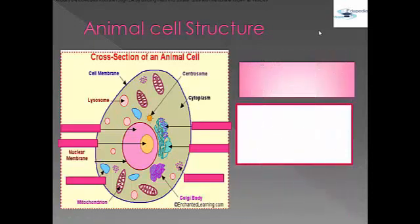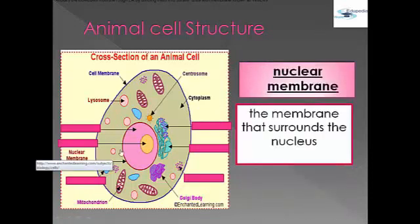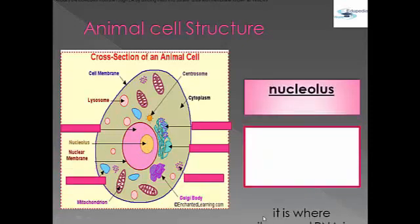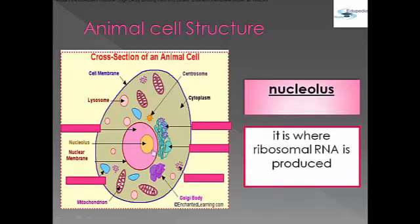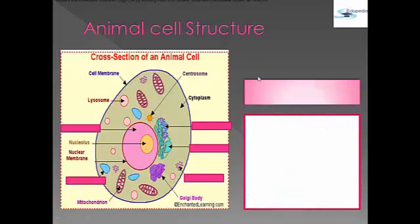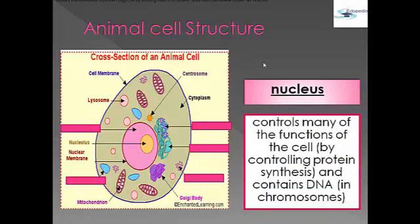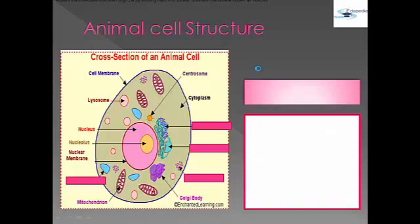Next is the nuclear membrane, which is the membrane that surrounds the nucleus. The nucleolus is where ribosomal RNA is produced. The nucleus controls many of the functions of the cell by controlling protein synthesis and contains DNA in chromosomes.